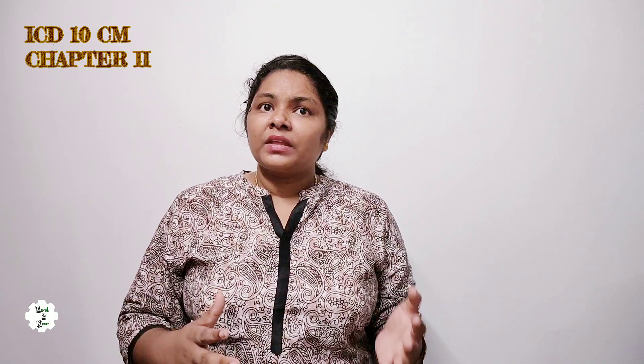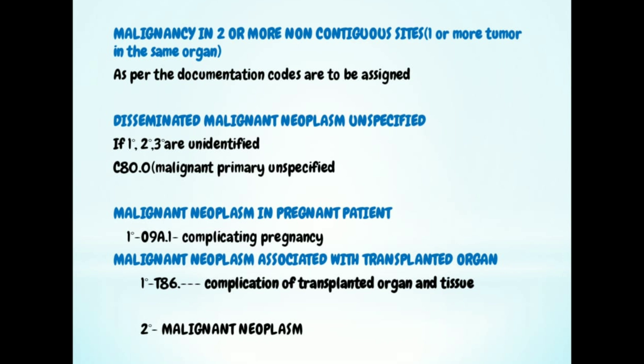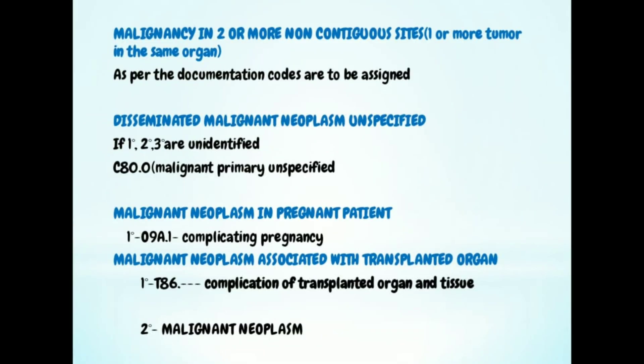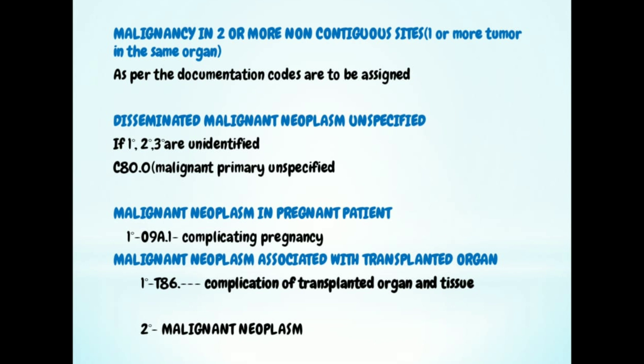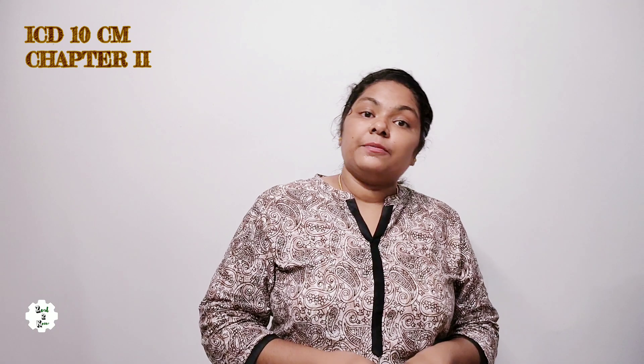Malignancy in two or more contiguous sites means the same organ is affected at more than one site. In this case, documentation guides coding — we code primary or secondary based on what the documentation specifies according to severity. For disseminated malignant neoplasm unspecified — when cancer has metastasized to many organs and we cannot determine which is primary, secondary, or tertiary — we use C80.0, malignant neoplasm primary unspecified.